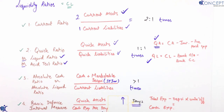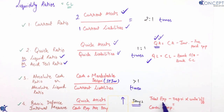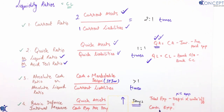Cash expenses per day kaise nikalte hain? Pehle cash expenses nikalte hain: total expenses minus depreciation minus write-offs equals cash expenses — kyunki depreciation aur write-offs non-cash expenses hain. Phir us amount ko 365 (ya 360, jo question mein bola ho) se divide karo to get cash expenses per day.